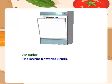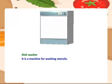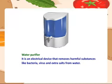Dish washer — it is a machine for washing utensils. Water purifier — it is an electrical device that removes harmful substances like bacteria, virus and extra salts from water.